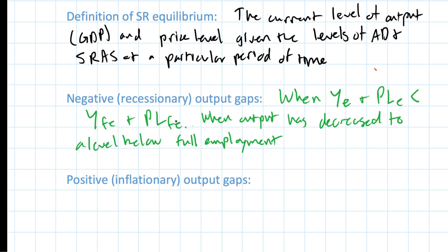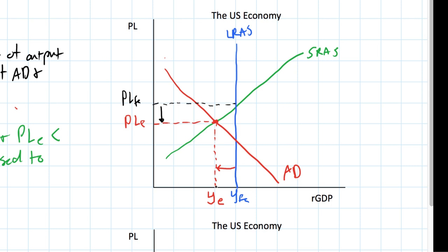I've described this situation as a recessionary gap. I can show that gap on my graph as the difference between the equilibrium level of output and the full employment level of output. The distance between YE and YFE is known as the recessionary gap. Real GDP is measured in dollars or any other currency, so this is actually a dollar value — we can determine the size of a country's recessionary gap based on how much smaller its actual GDP is than it would be at full employment.